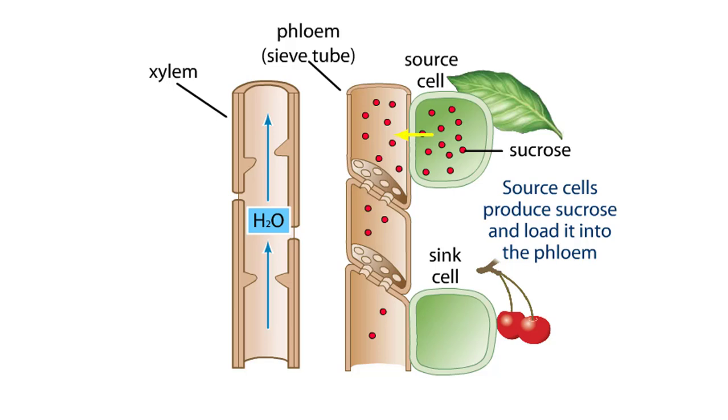Source cells produce sucrose and load it into the phloem. Source cells are typically photosynthetic leaf cells, but they can also be other cell types. For example, root cells with large stores of carbohydrates can act as source cells by releasing these carbohydrates into the phloem.